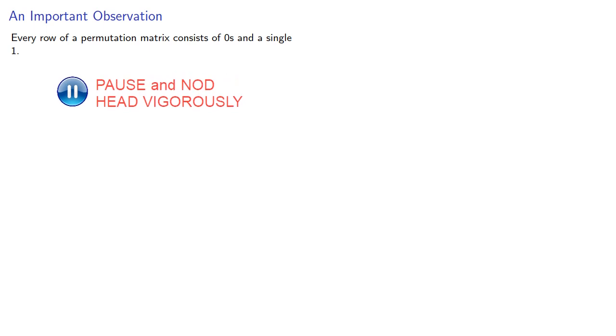So here's an important observation. Every row of a permutation matrix consists of zeros and a single one. So if u and v are the vectors corresponding to different rows, we know the dot product will be zero because the ones won't align.